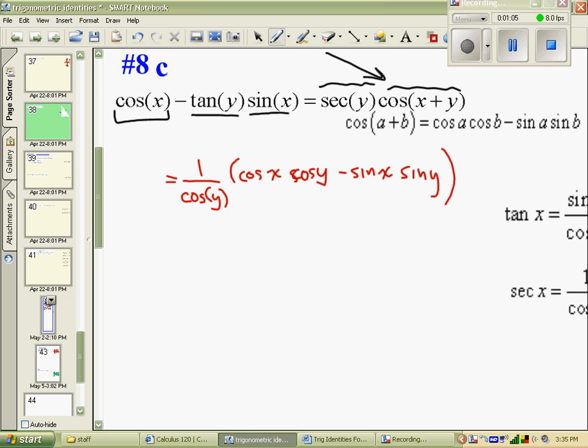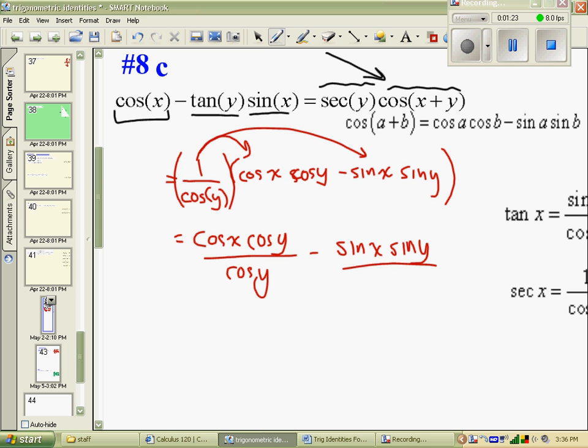Now, I've got 1 over cos y that I'm going to multiply in each spot, so I would be left with cos x, cos y, over cos y, minus sine x, sine y, over cos y.